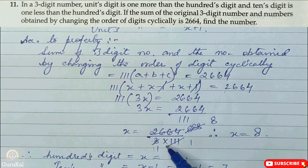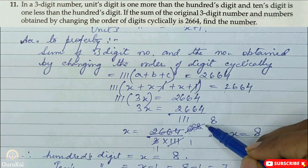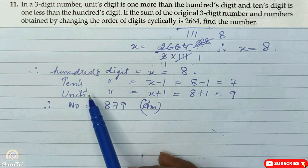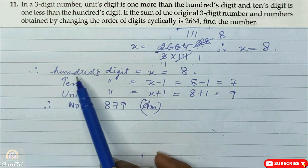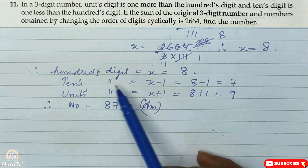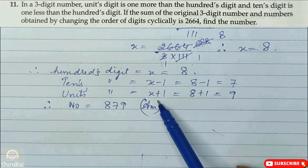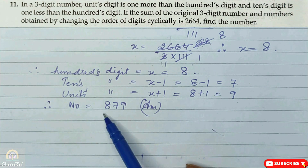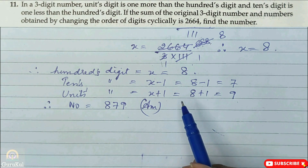2664 is divisible by 3, giving 888. Then 888 divided by 111 gives 8. So X = 8. Therefore: 100th digit A = X = 8, 10th digit B = X minus 1 = 7, unit digit C = X plus 1 = 9. The three-digit number is 879. With this we come to the end of exercise 5.1.